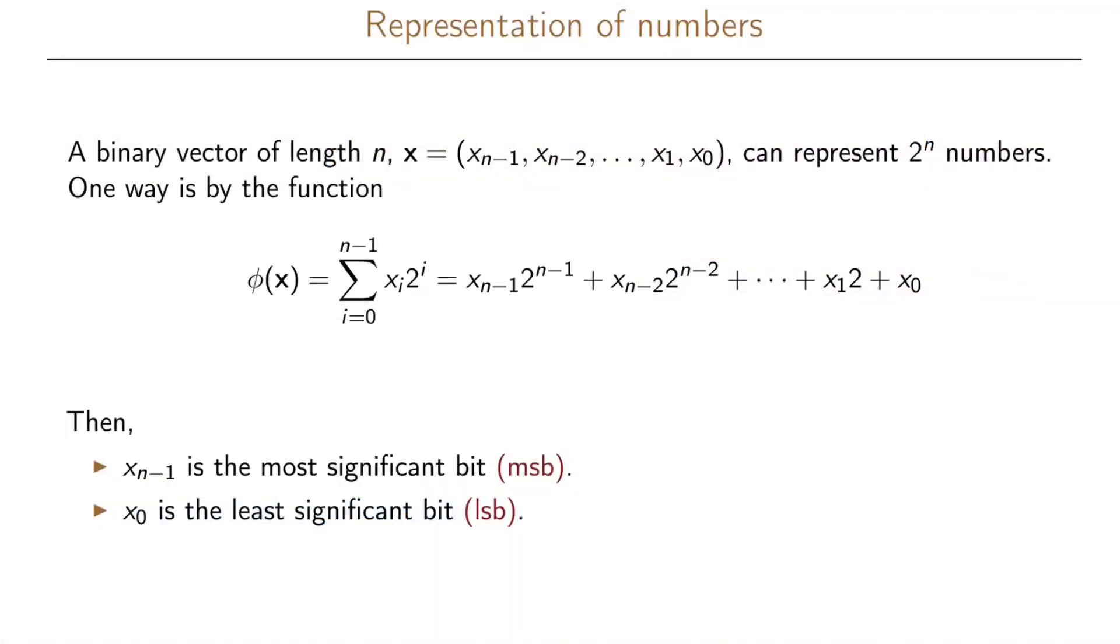Let us now look at different ways of how we can represent numbers. So if we have a binary vector that is of length n and we write this vector as x, the entries in the vectors are x sub n-1, x sub n-2 and so on until x sub 0.